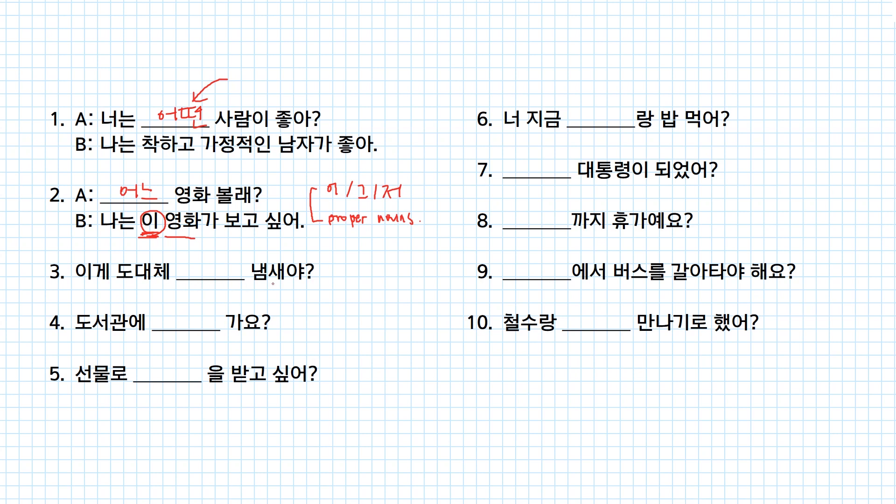이게 도대체 무슨 냄새야? What on earth is this smell? You have no idea what this smell is. Therefore, 무슨? 도서관에 어떻게 가요? How can I get to library? How? 어떻게. For a present, what do you want to get? 선물로 무엇을? What? Or you could say 뭐를? Or just 뭐?